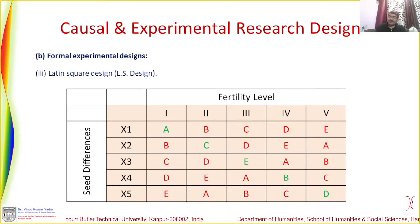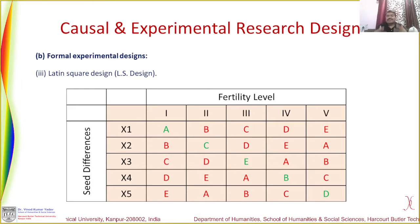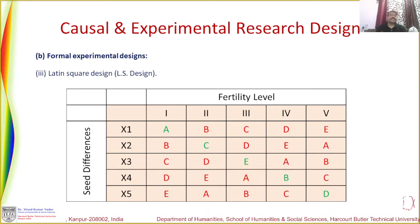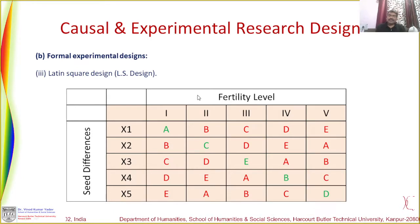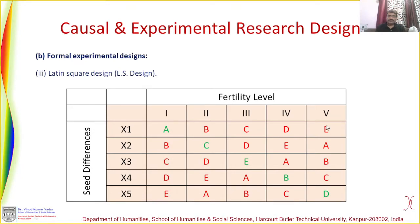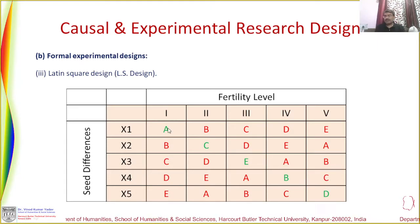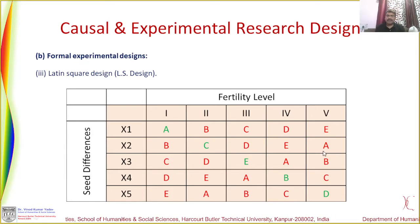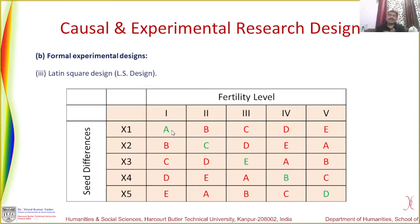When you conduct this latin square design, you consider extraneous factors such as fertility level and quality of seeds. The important thing is that the area is in a square form, and in each column only one experiment is possible. Each column and row would have only one unique type of fertilizer, which gives you the result for that experiment.